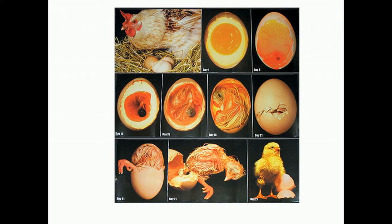At around 18 days, the chick is fully formed inside the egg. And at around 21 days, the chick is ready to hatch — it breaks and comes out of the shell.